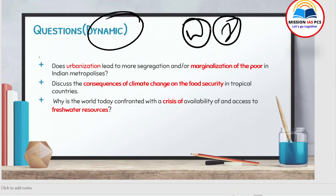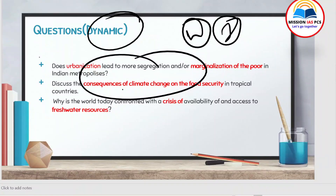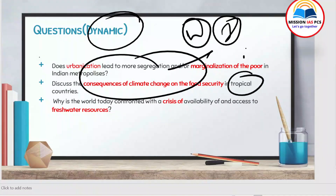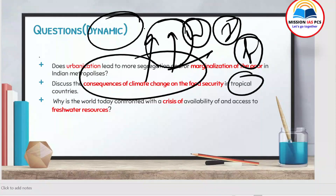The second part covers dynamic questions, which are dynamic in nature — like Indian society questions. You also have to understand the consequences of climate change on food security in tropical countries like India and South Asia. When there is climate change, crops that traditionally survived the current climate will not be able to survive. There are many more points, but my aim here is to tell you about the sources from where you can prepare.